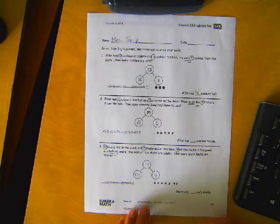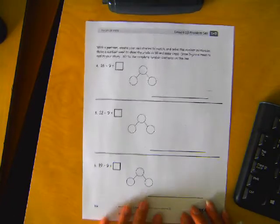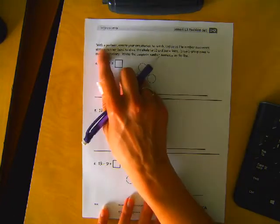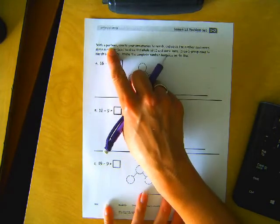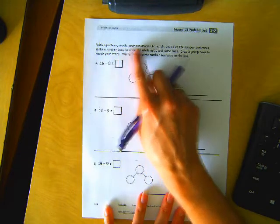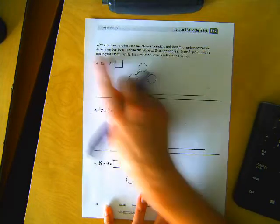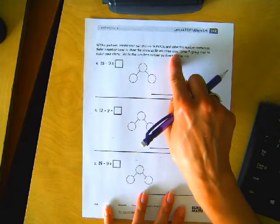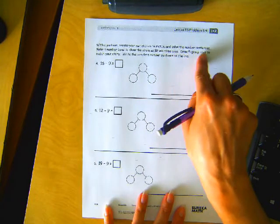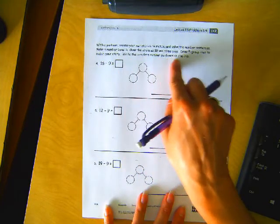I'm going to flip it over to the other side. If you're not ready yet, remember you can always pause it. And keep going when you're ready. With a partner. This is Scope Gets to Be the Partner. Because we're doing it on a recording. Create your own stories to match. And solve the number sentences. Make a number bond to show the whole as ten and some ones. Draw five group rows to match your story. Write the complete number sentence on the line.